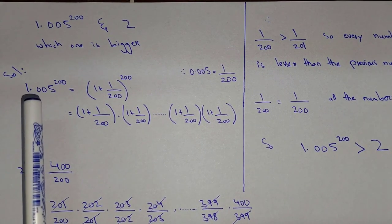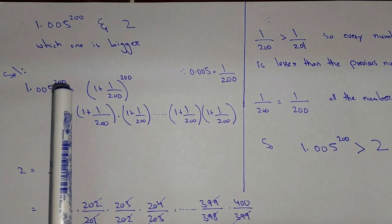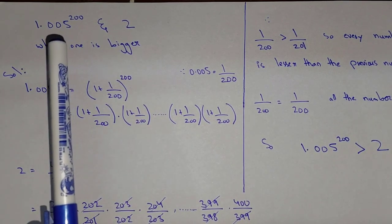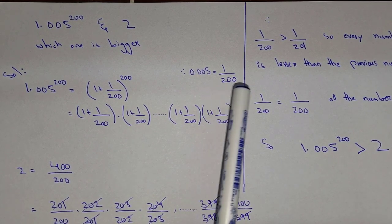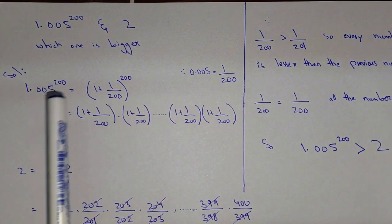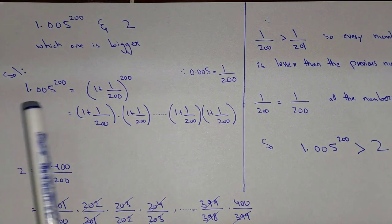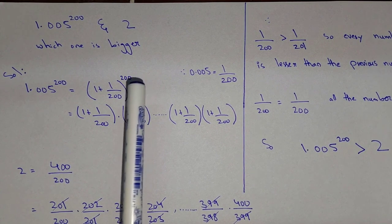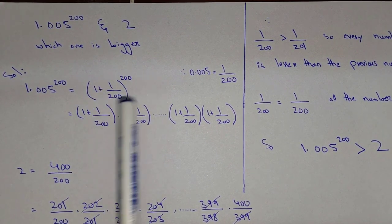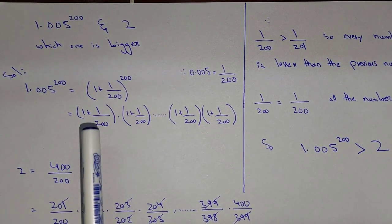Here we have 1.005 power 200, so we know that 0.005 is equal to 1 over 200. So we can write this one as 1 plus 1 over 200 whole power 200, and we can write this one number as 1 plus 1 over 200 whole power 200.